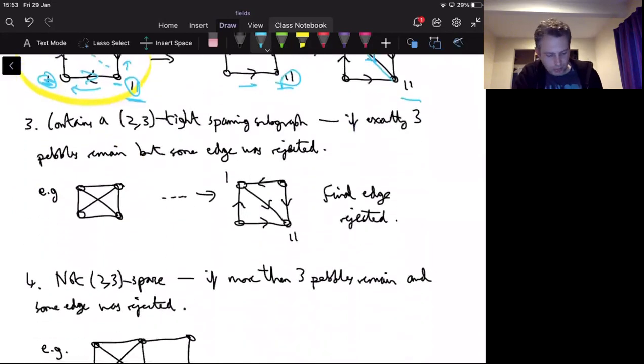What's the third one? So same example, except I've added one more edge. So here, this is the case when exactly three pebbles remain, but some edge was rejected. And what's the edge that was rejected? Well, in the example I did, it was this edge going across because I've only got three pebbles left. So it's not possible. I can move some pebbles there and I can move some pebbles to each of these two, but I've only got three and I need four to be able to accept an edge. So the last edge was rejected. So that's three pebbles remain, but some edge was rejected.